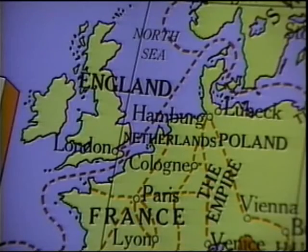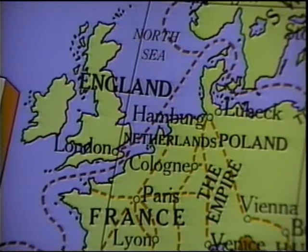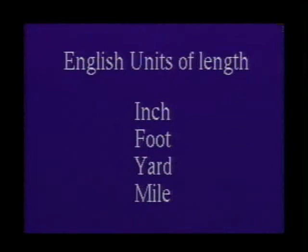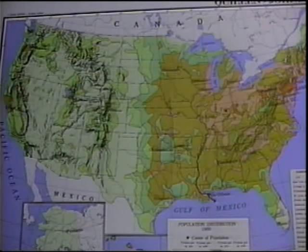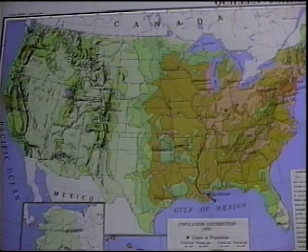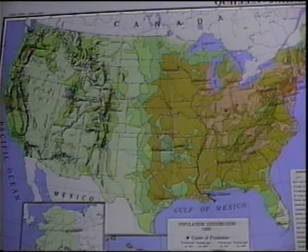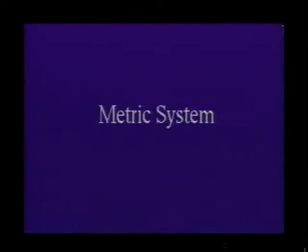These early crude measurements were eventually refined and standardized by the English. The most common English units of length are the inch, foot, yard, and mile. The United States is the only major country in the world that still uses this system of measure. All other major countries use the metric system, which was developed about 1800.